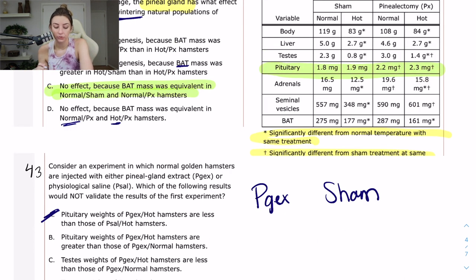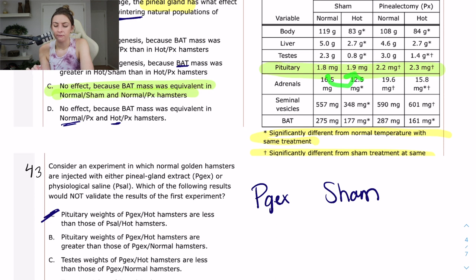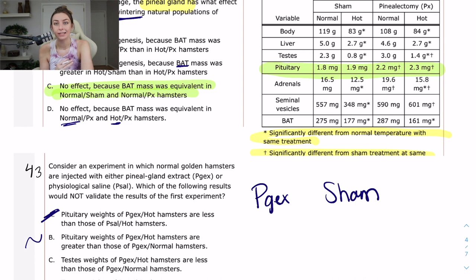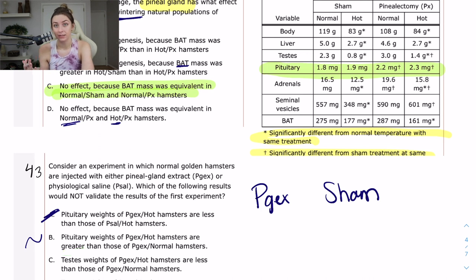Answer B says pituitary weights of PGX hot hamsters are greater than those of PGX normal hamsters — comparing temperature rather than pineal gland extract. Looking at the table, in both sham and pinealectomy groups there was a very modest increase in pituitary weight when temperature increased, but it was not statistically significant. So this answer is a bit suspect — it doesn't necessarily go opposite to the first study or invalidate it. I'll put a maybe beside it and look for one that shows a clearly opposite relationship.